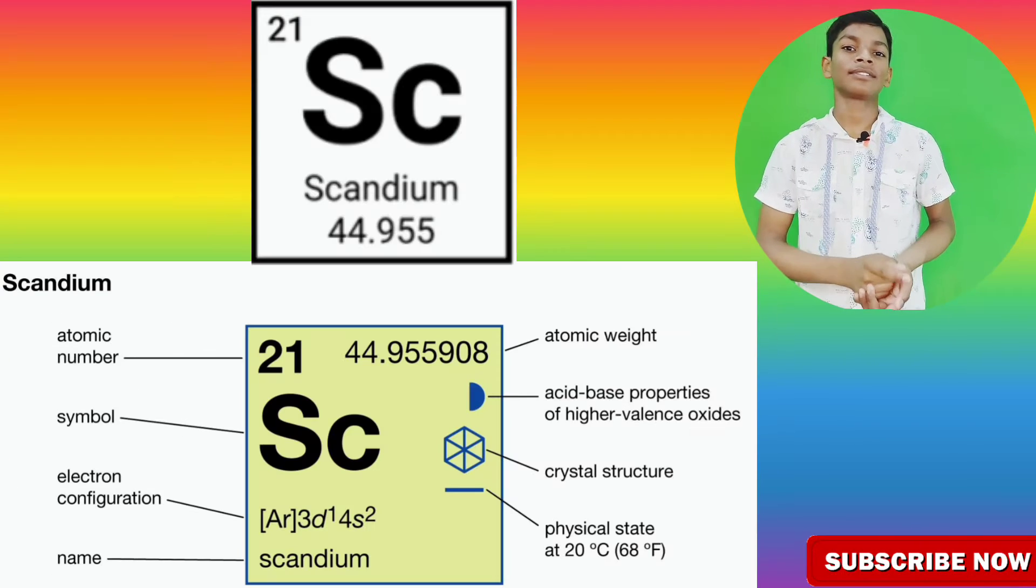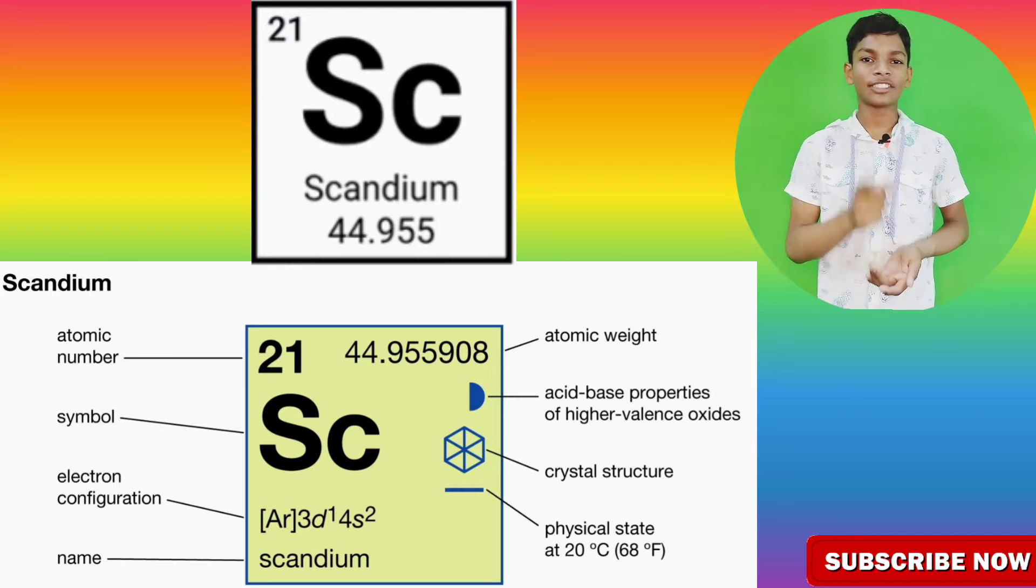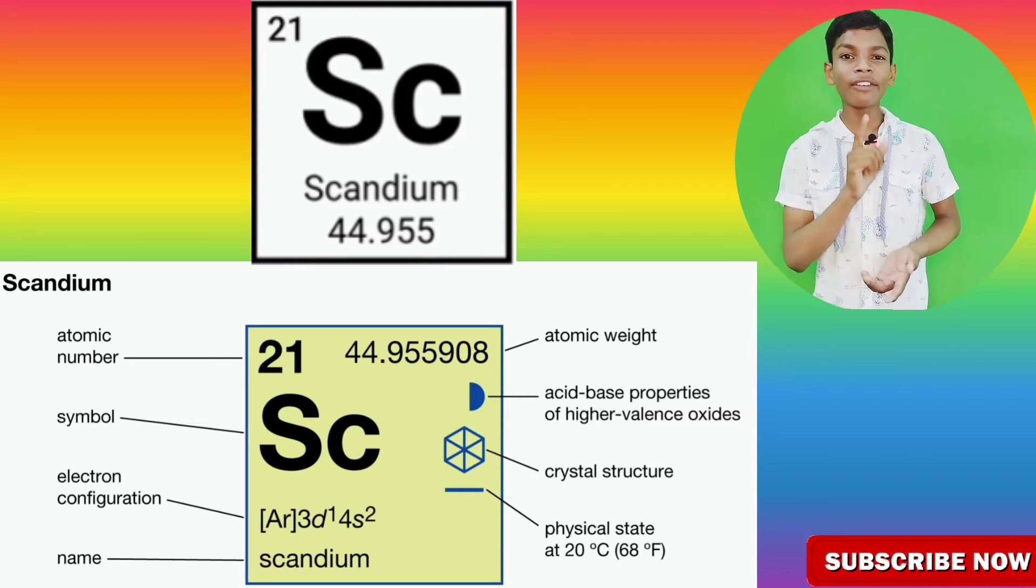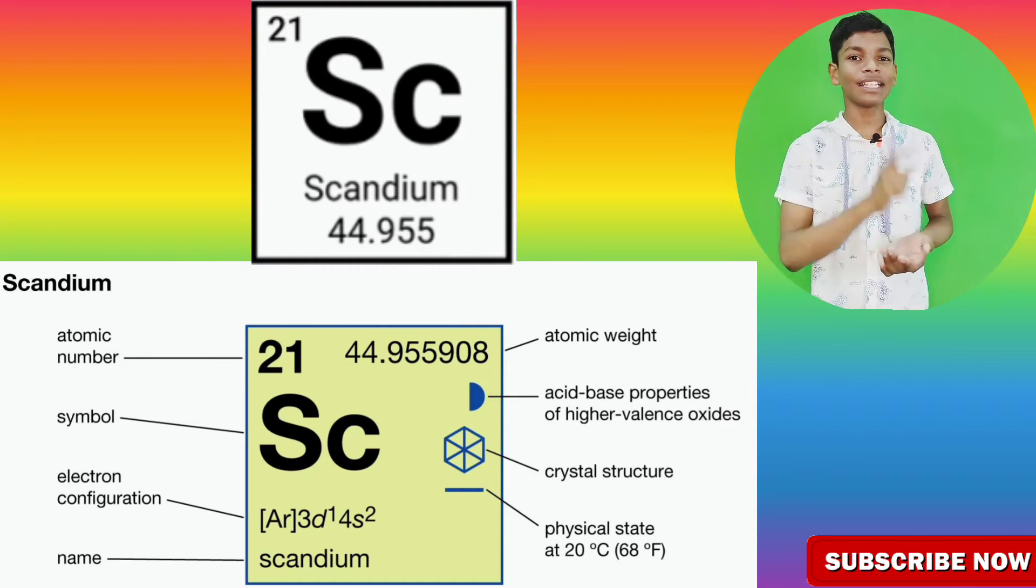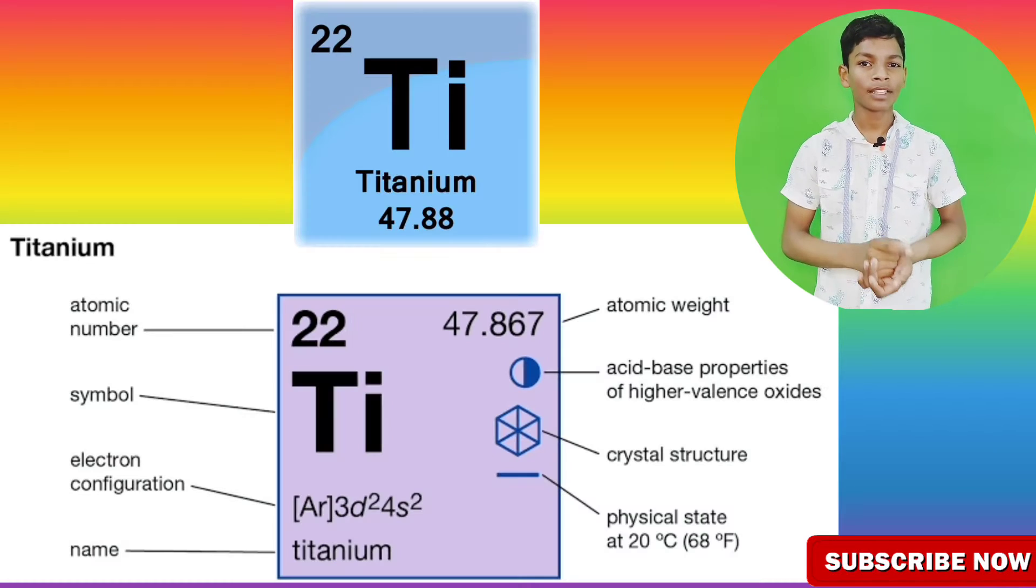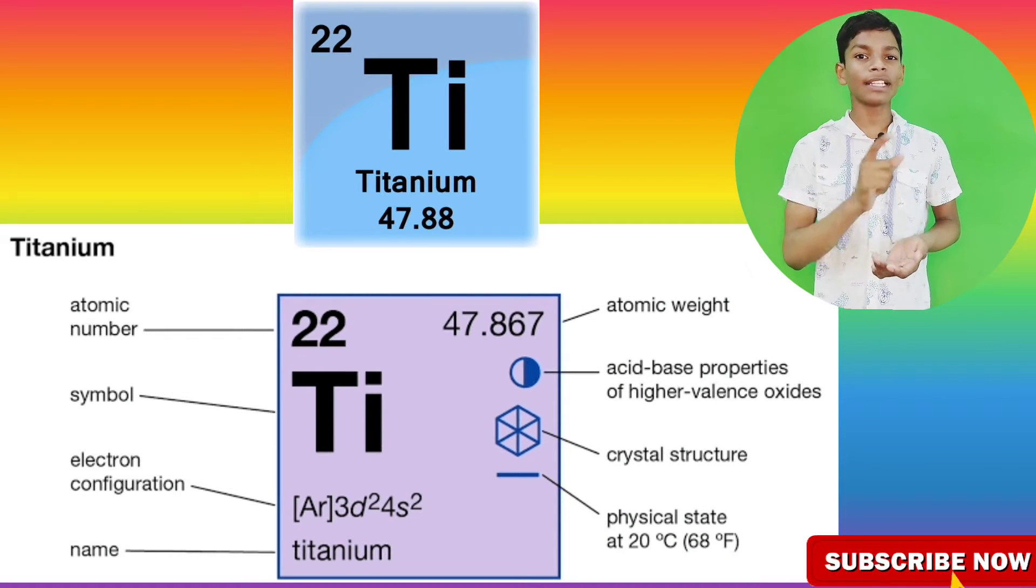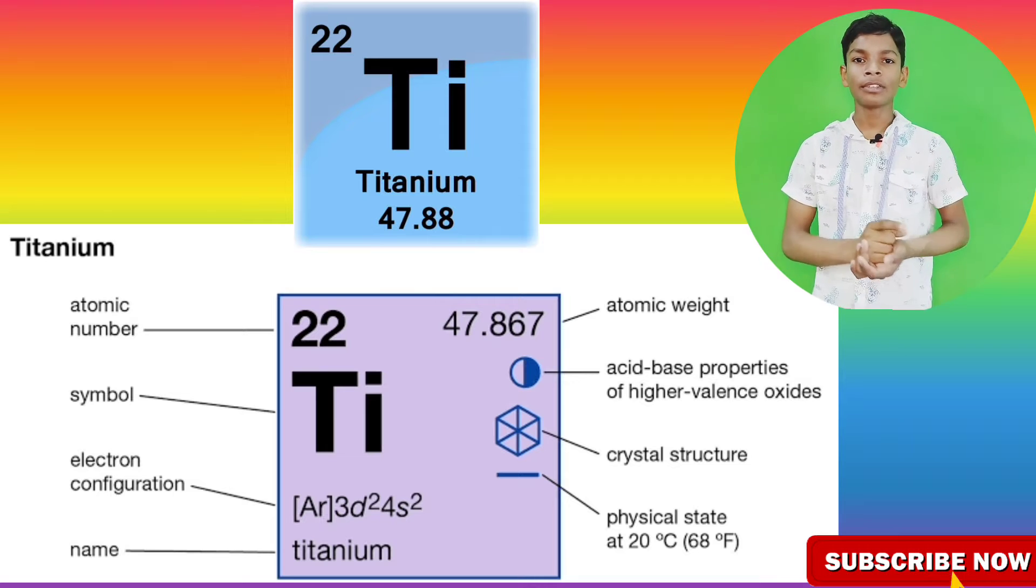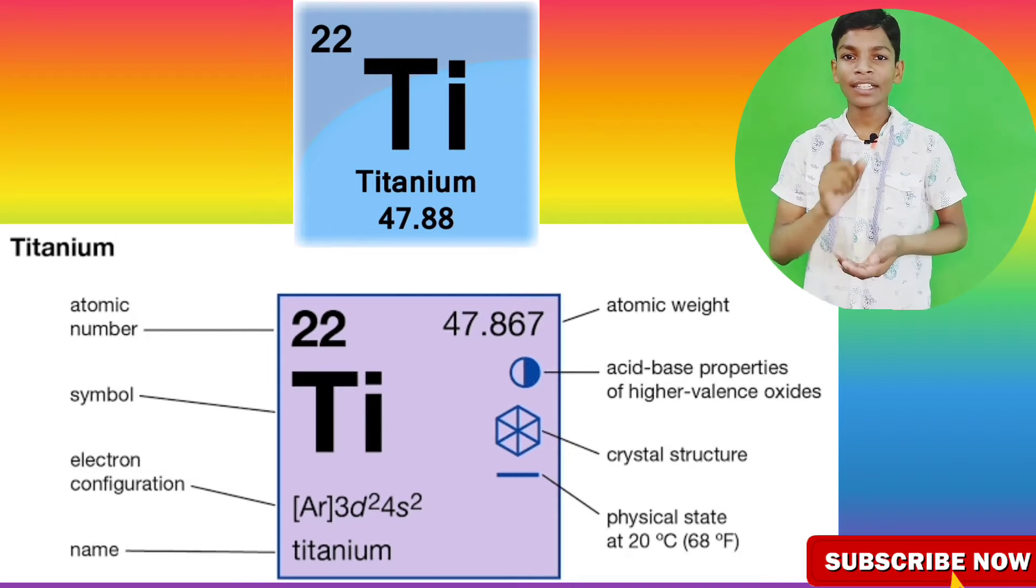Scandium: its atomic number is 21 and symbol is Sc. Titanium: its atomic number is 22 and symbol is Ti.